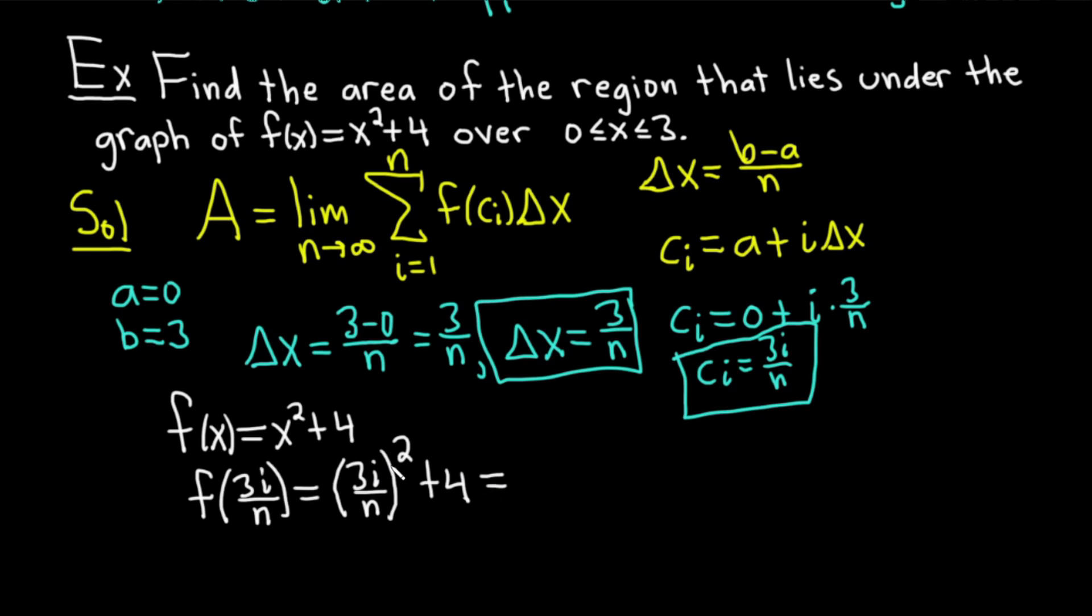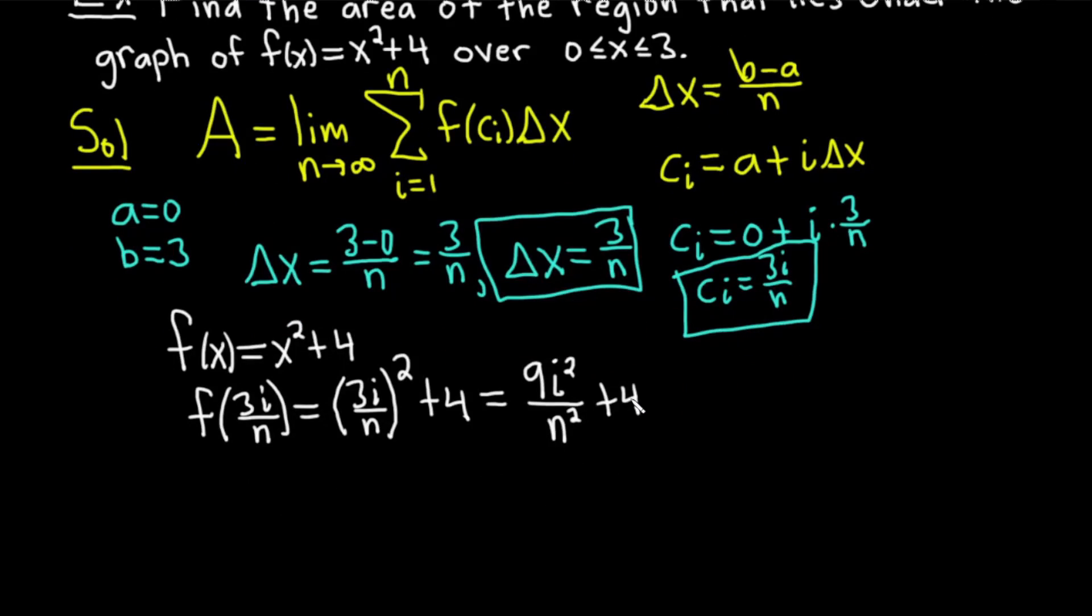This equals, so you square the 3, you get 9. You square the i, you get i². And you square the n, you get n². Then you still have the plus 4. And I'm going to write that one more time. I'll write it over here and put it in a box, just like I did the other pieces. So we have f(c_i), even though c_i is 3i/n, just so we have it and it fits what we have up here. We said that was 9i²/n² + 4. So that's going in a box as well.